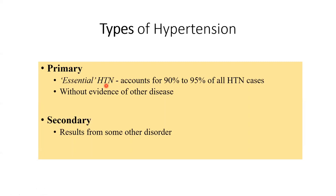History, examination, and investigations will reveal elevated blood pressure fulfilling diagnostic criteria, but you would not be able to pinpoint the cause. However, since these are the majority of cases, detailed protocols exist for managing them. In secondary hypertension, the role of management is to go for the cause, because unless you treat the cause, you won't treat the hypertension.